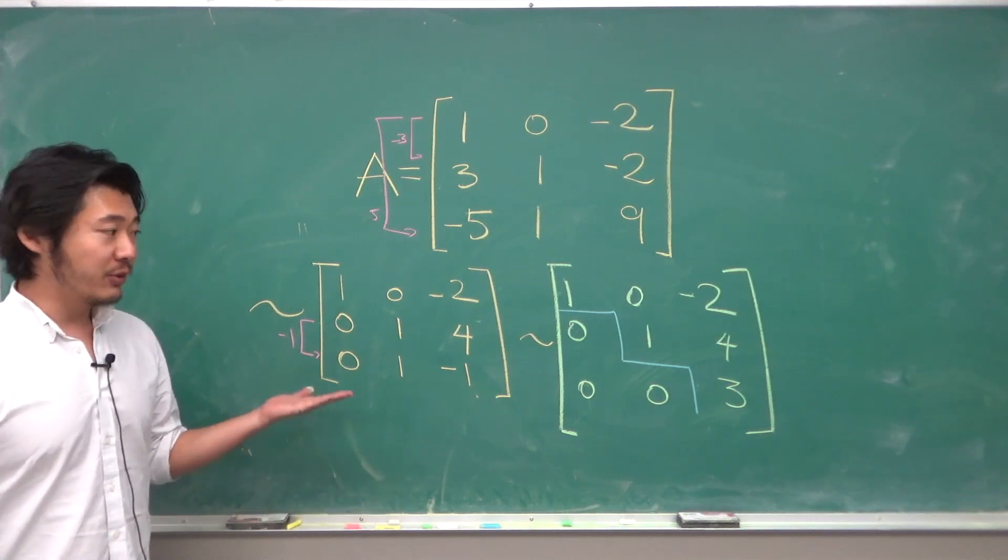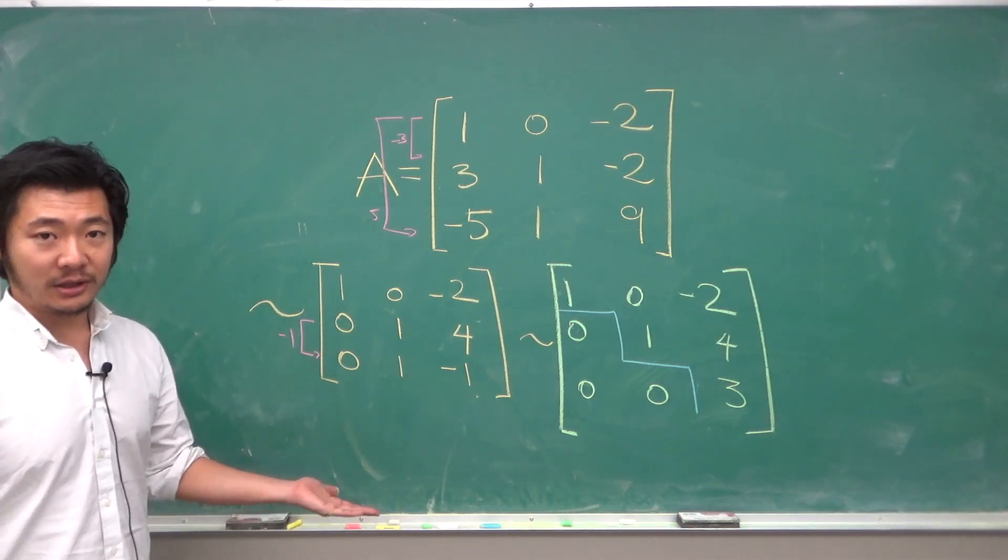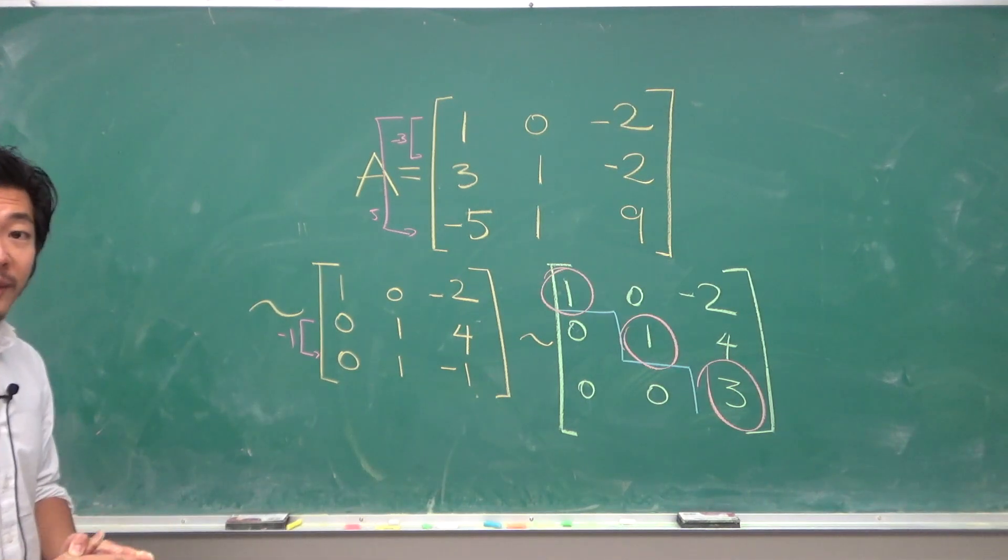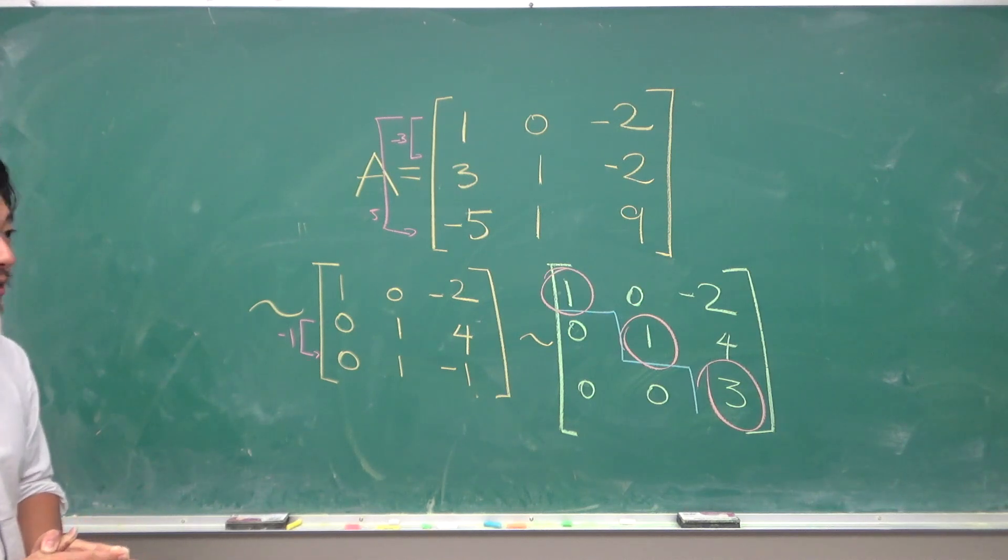And the echelon form will tell us which entries are the pivot entries. So a 3x3 matrix has three pivot positions. So by Invertible Matrix Theorem this is invertible.